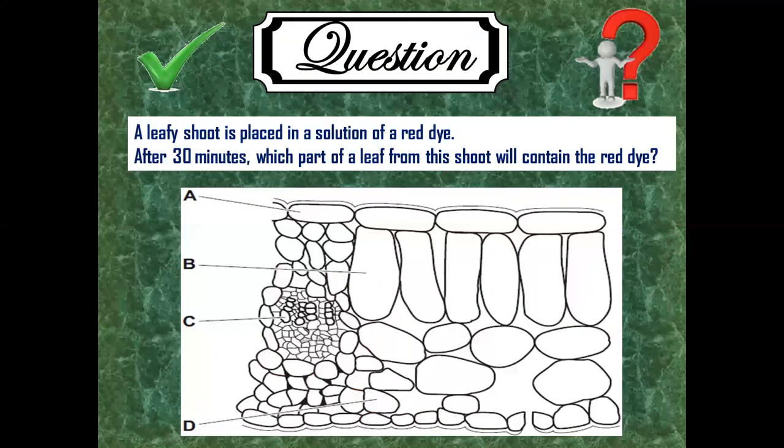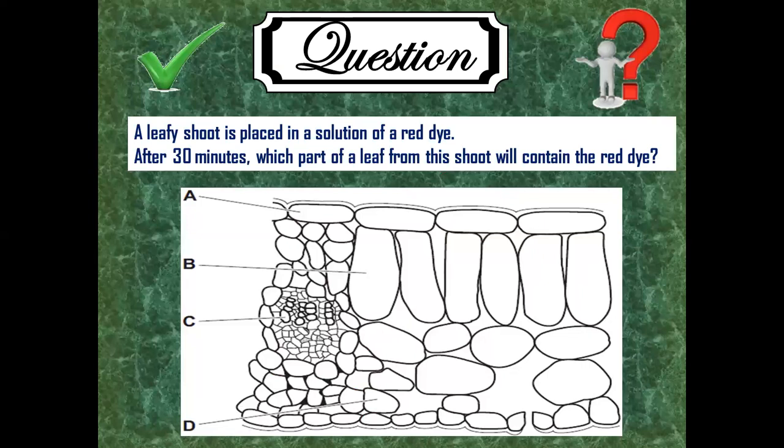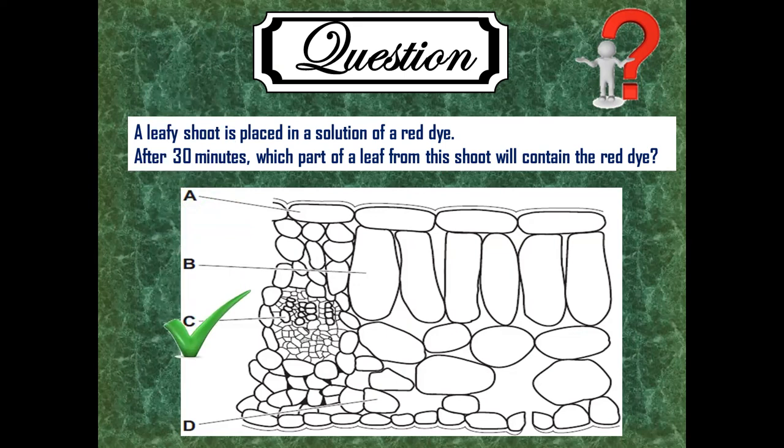We're going to see the type of questions that might possibly be relevant to the bifacial leaf. A leaf shoot is placed in a solution of red dye. After 30 minutes, which part of the leaf from this shoot will contain red dye? So we can see water is moving in xylem of vascular bundle. So the xylem is C, while A is epidermis, B is palisade mesophyll, and D is spongy mesophyll.